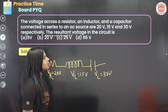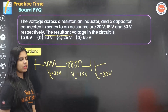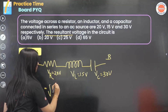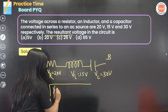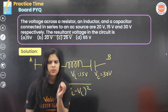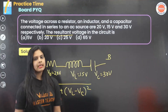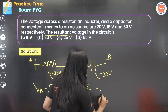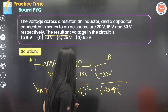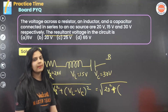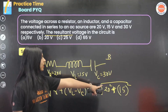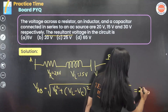We have to find the resultant voltage VAB in the circuit. VAB = √(VR² + (VL − VC)²). So that is √(20² + (15 − 30)²) = √(400 + (−15)²) = √(400 + 225).